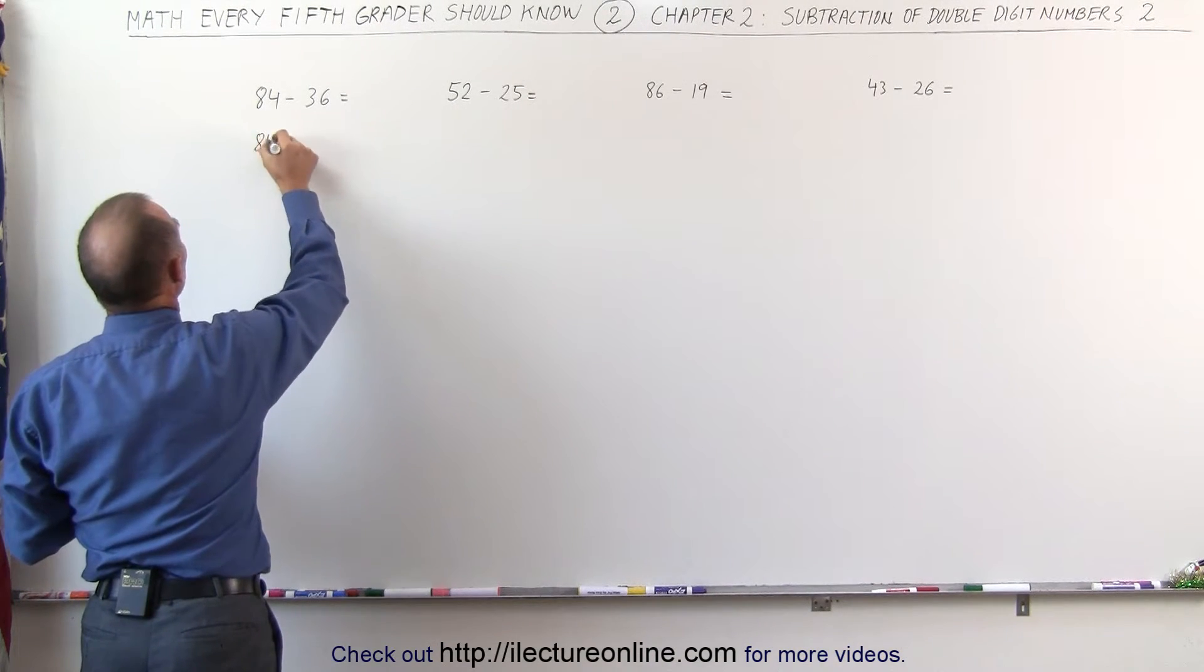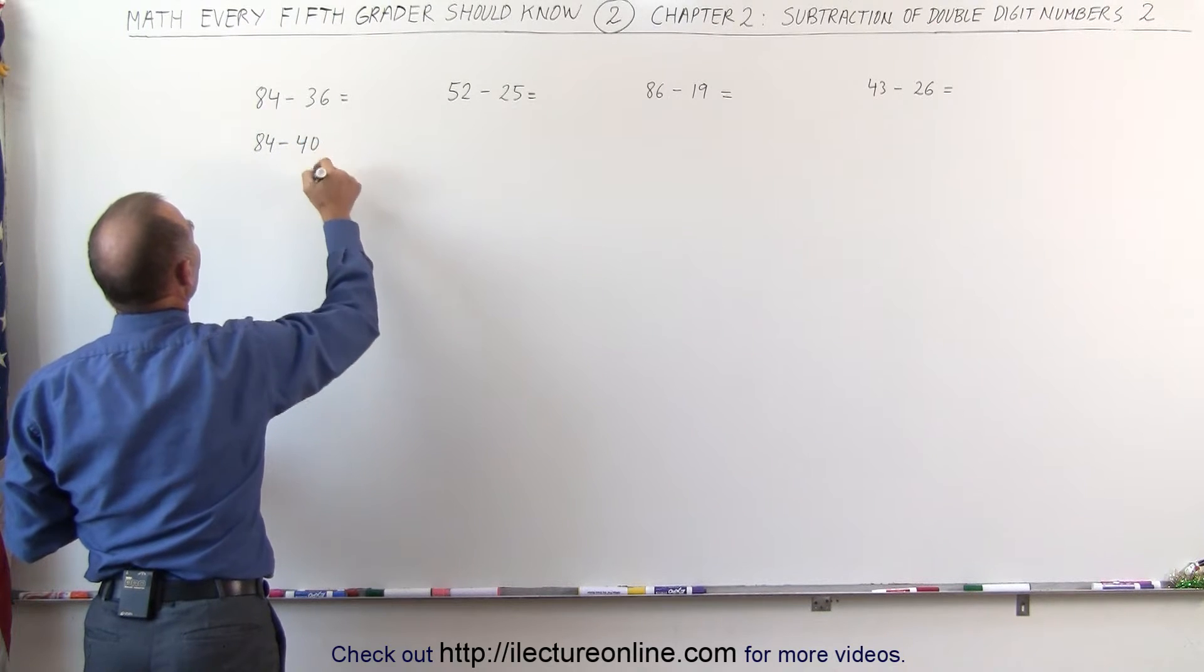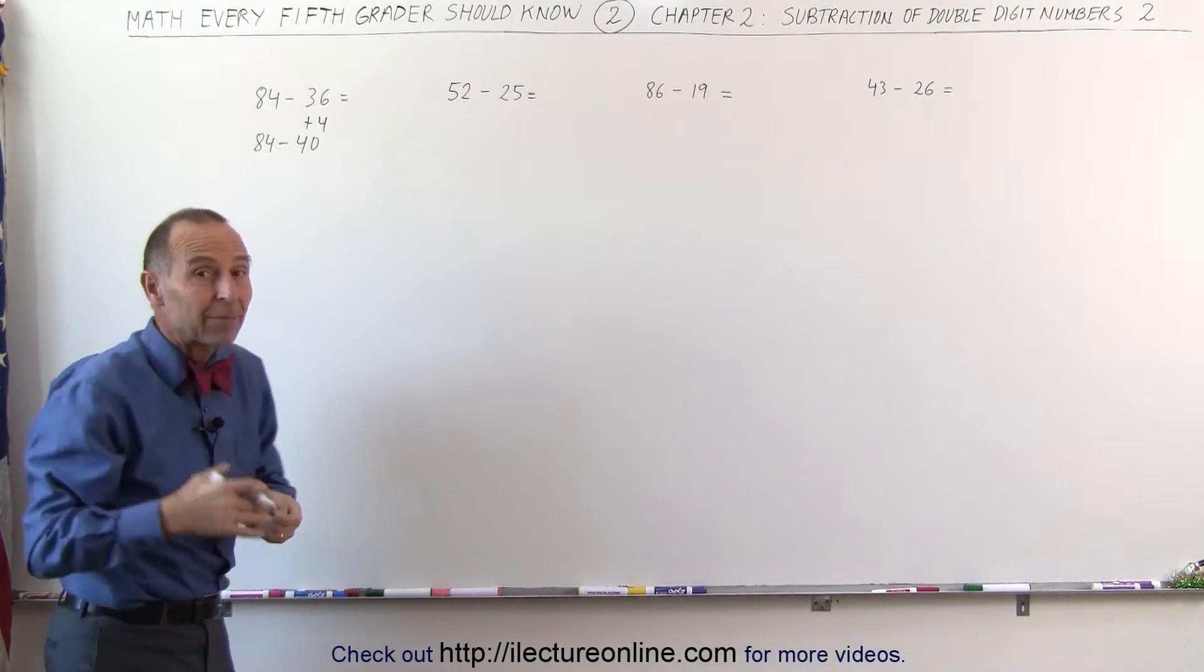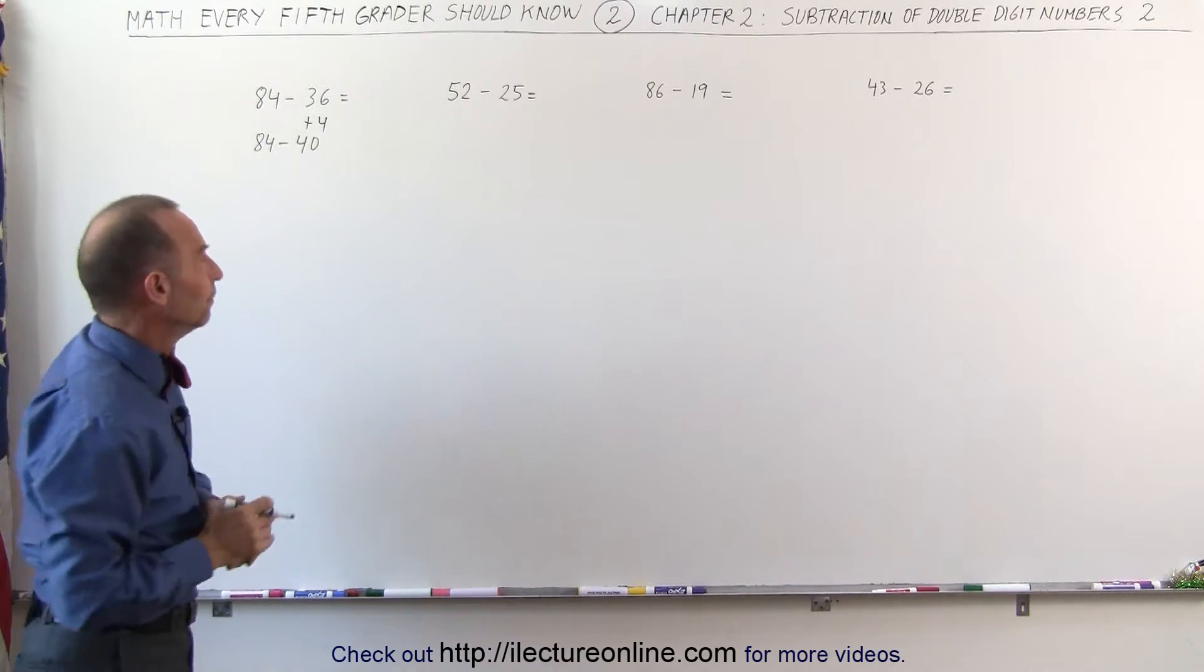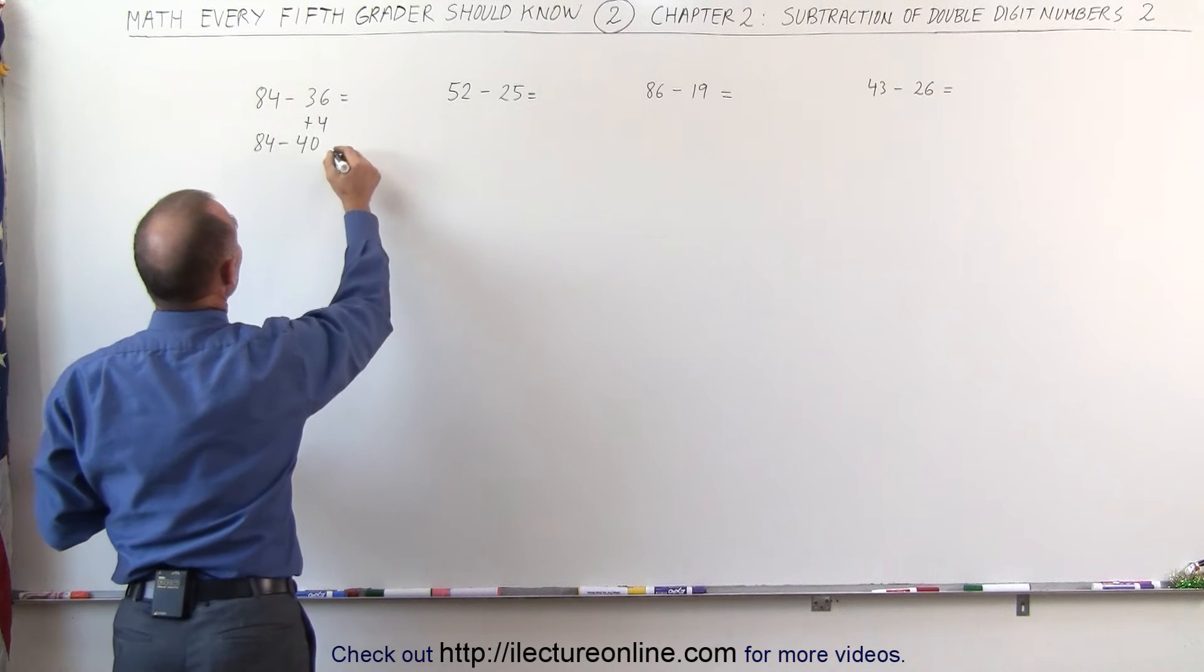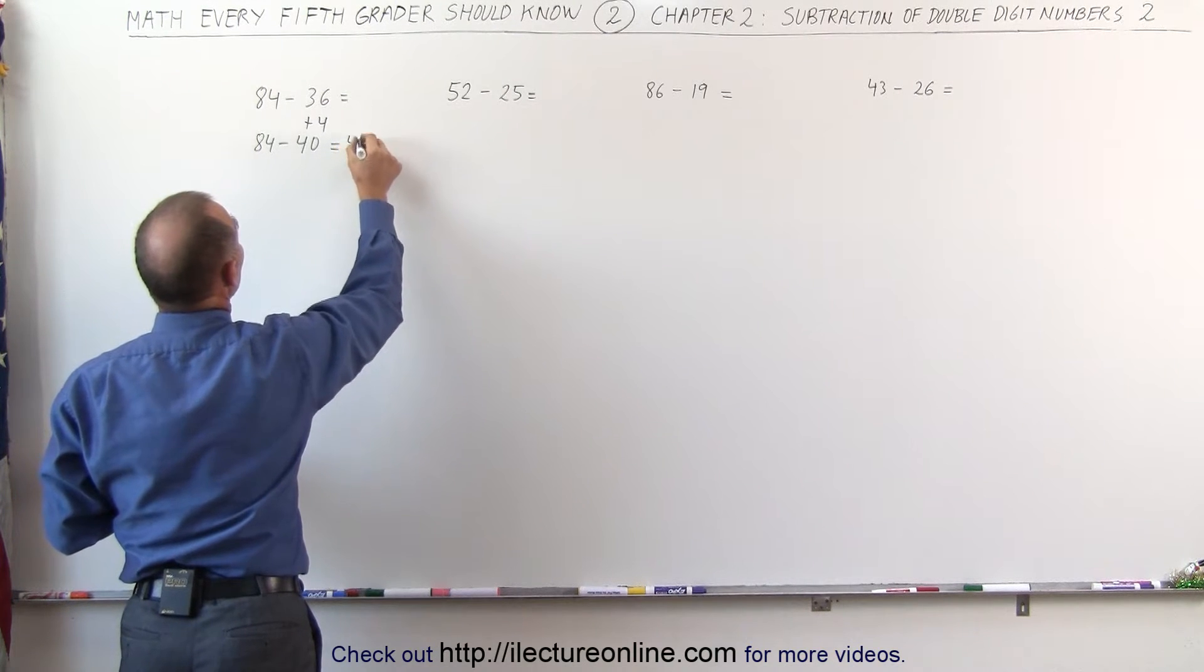I'm going to take 84 and subtract 40 from that, which means I added 4 to this number. In other words, I'm subtracting 4 more than I should. But that's an easy number to subtract, because I know that 84 minus 40 is equal to 44.